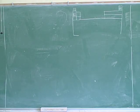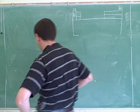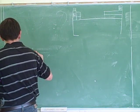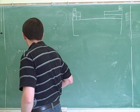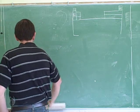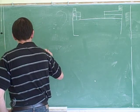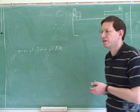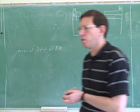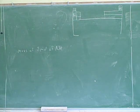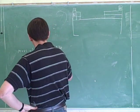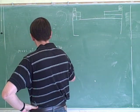You saw the periodic table? So what's the mass of one mole of neon? Use your periodic table to find the mass of one mole of neon. It's 20.1797.